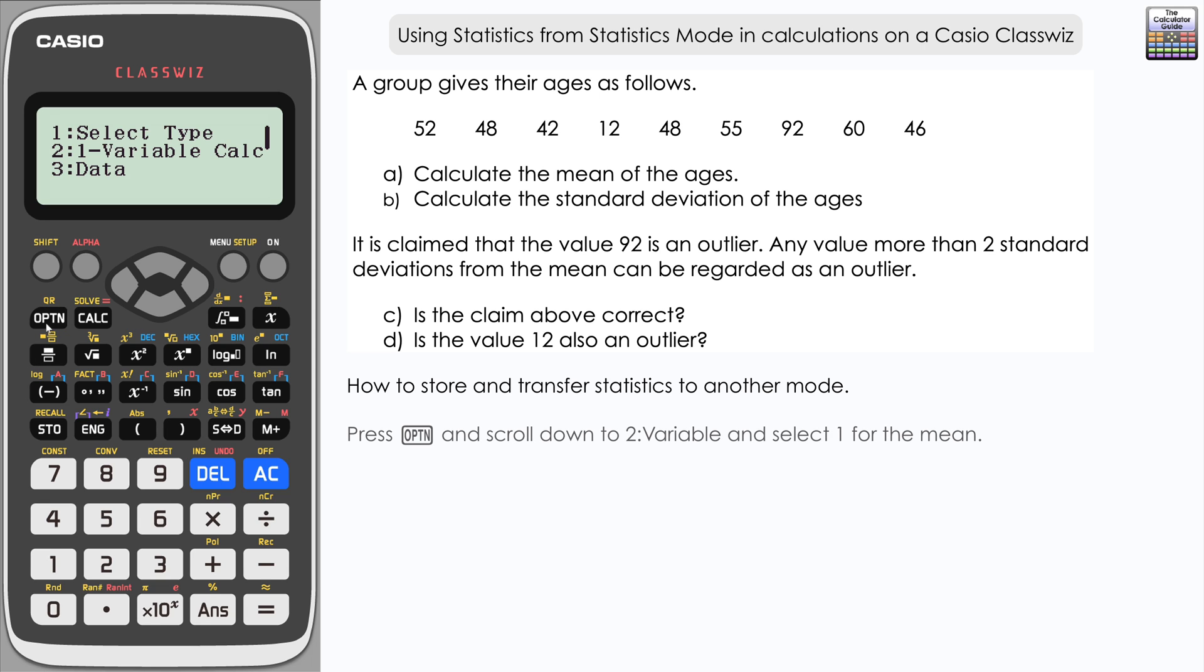Let's recall the mean again. Press option, scroll down to variable, X-bar 1. We can store this in memory A. Press store and A. You can see the arrow shows that the value for the mean has been stored in A.